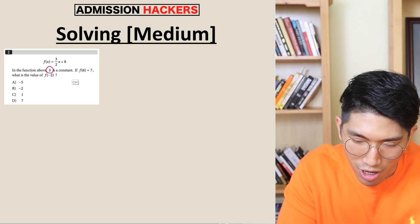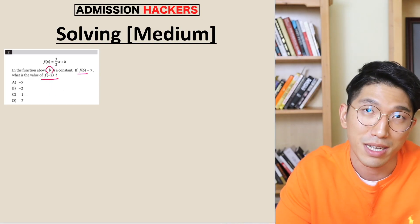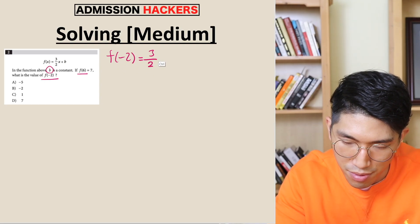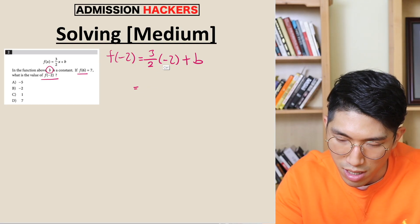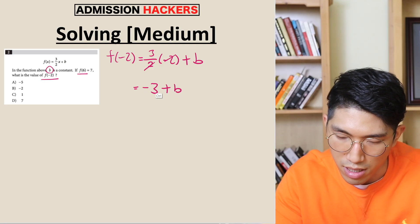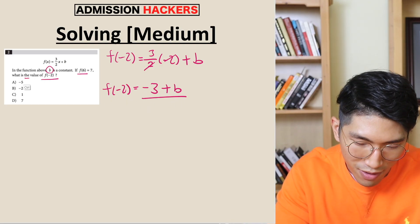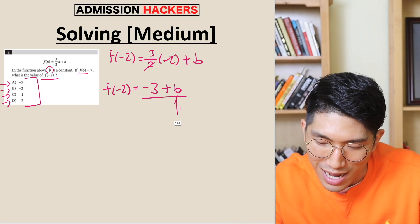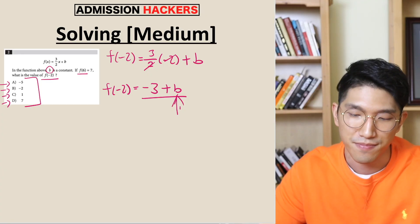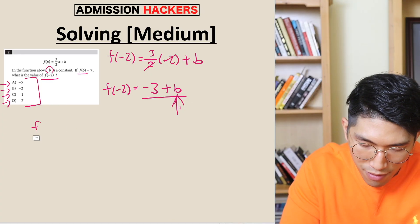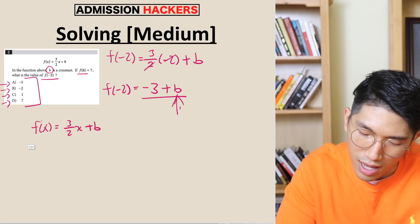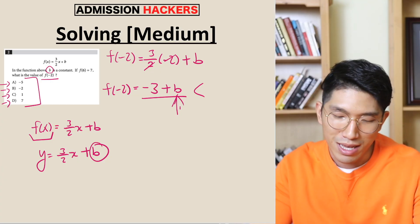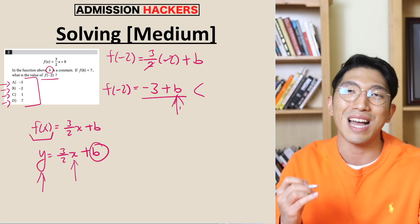Medium question. In the function above, b is a constant. If f(6) = 7, what's the value of f(−2)? So we plug in: f(−2) = (3/2)(−2) + b, which gives us −3 + b. But none of our answer choices have a b — they're all flat numbers. Which means we have to find out exactly what b is equal to. So let's go to the function: f(x) = (3/2)x + b. To find b, we need an x and y value so that b is the only unknown. The question tells us f(6) = 7, meaning when x = 6, y = 7.